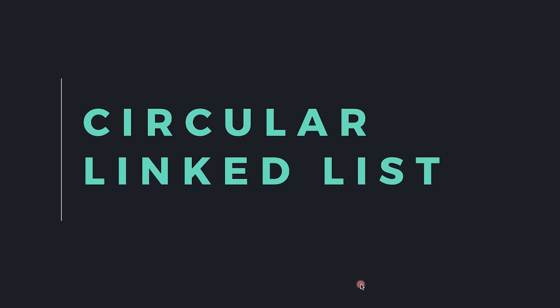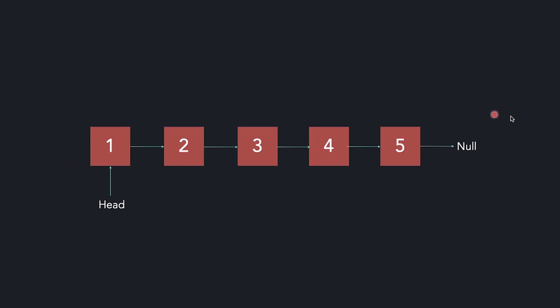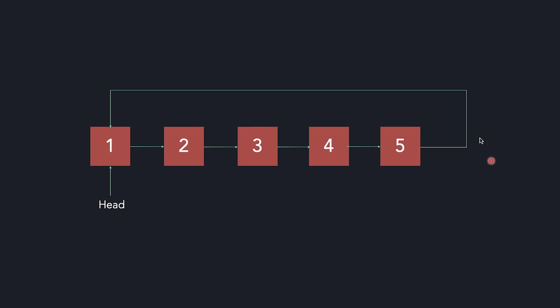Hi everyone. Today we are going to study a new type of linked list which is circular linked list. Let's see how this is different from the single linked list we have studied up till now. In a single linked list, if I want to make it a circular linked list, the difference is that the last node, instead of pointing to null, will be pointing to our head node, which is our first node.